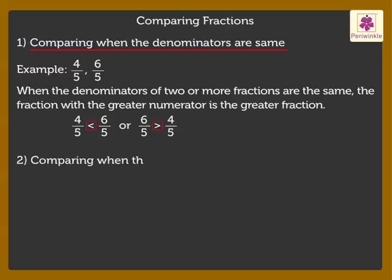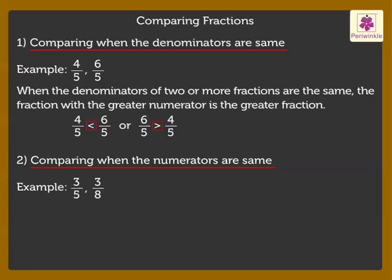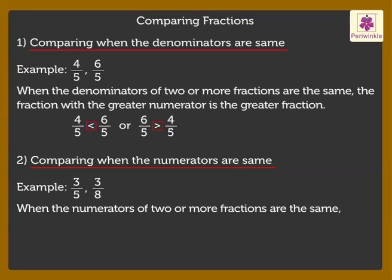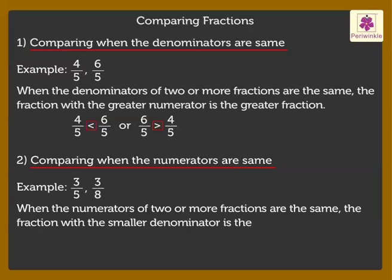Comparing when the numerators are same. Look at the fractions 3 upon 5 and 3 upon 8. When the numerators of two or more fractions are the same, the fraction with the smaller denominator is the greater fraction. So we can say that 3 upon 5 is greater than 3 upon 8, or 3 upon 8 is smaller than 3 upon 5.